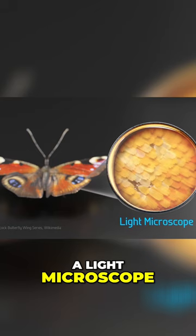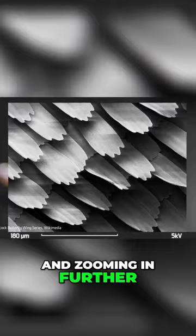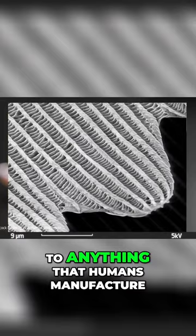But when we zoom in using an electron microscope, we can clearly see the shape of each scale. And zooming in further, we see how the scales have a truly incredible texture entirely foreign to anything that humans manufacture.